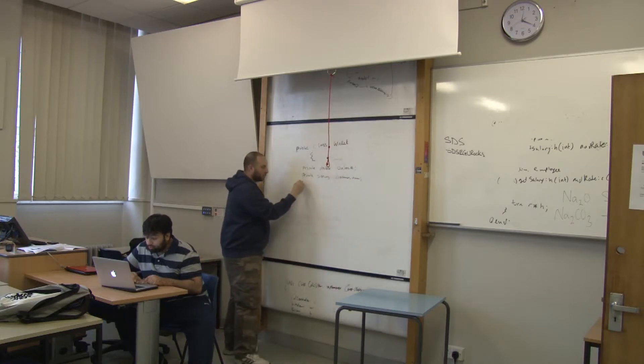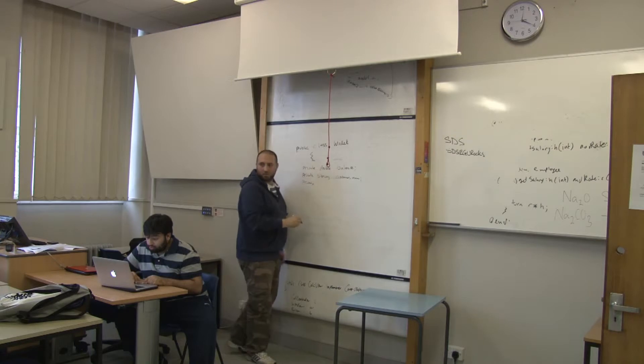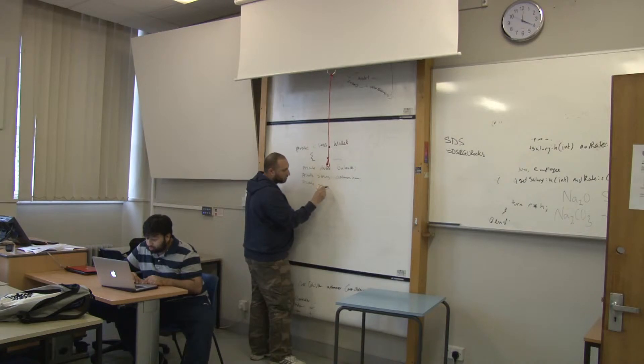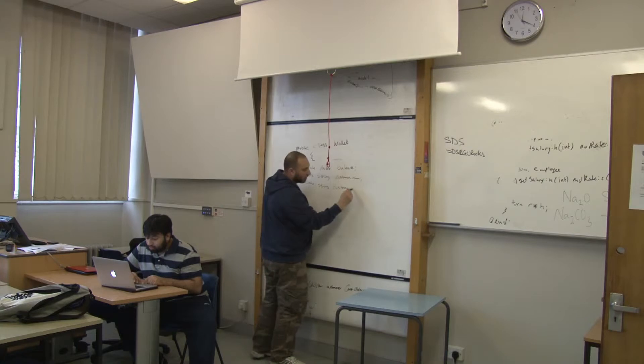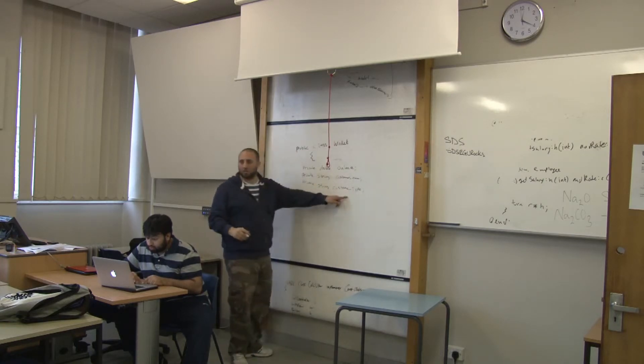And then after that, we've got private. Don't go in. Oh, you know what? We're going to do string again. Make it simple, yes? String. Customer. Type.